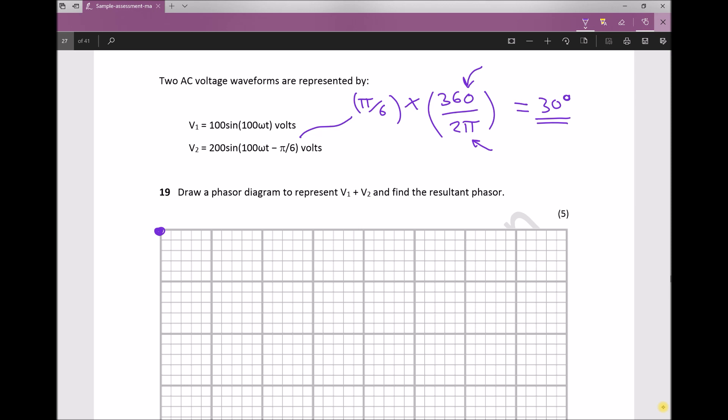V1 doesn't have a phase shift or phase angle, whereas V2 has a phase shift of minus pi over 6, or minus 30 degrees. We draw V1 as a horizontal line running from left to right because it has no phase angle, and it needs to be 100 long because the amplitude of V1 is 100.